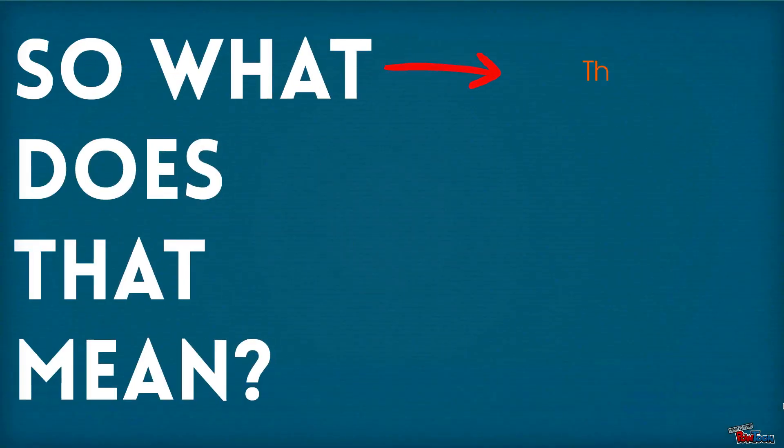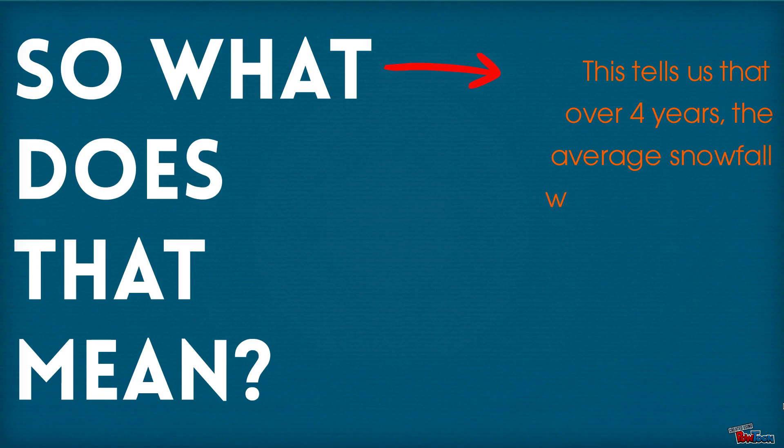So what does this mean? Well, this tells us that over four years the average snowfall was 190.75 inches of snow.